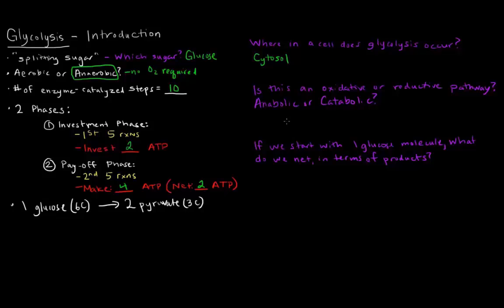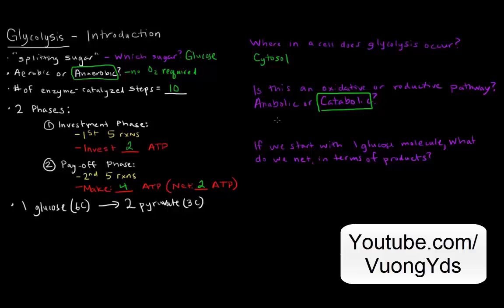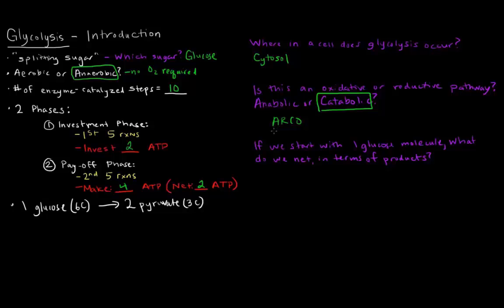If you watched the last video, you probably remember that anabolism is the building of macromolecules or building of molecules, and catabolic means the breaking down of molecules. So in this case, we're taking glucose and we're making it into two pyruvate, two smaller components. So this will definitely be a catabolic pathway because we're breaking something down. Now, if you recall, I mentioned ARCO. And ARCO is just a short acronym to help you remember that an anabolic process is reductive, and a catabolic process is oxidative. So this process is an oxidative pathway. So it's an oxidative catabolic process. And it's catabolic because we're taking glucose and we're breaking it down into a simpler component.